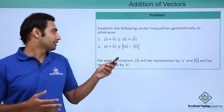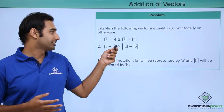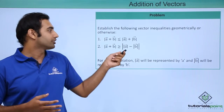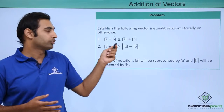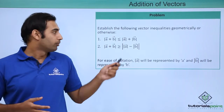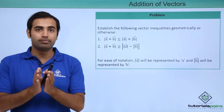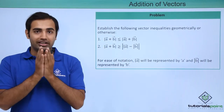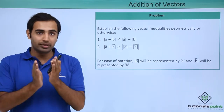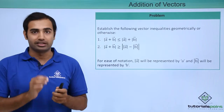The second inequality is that the magnitude of vector A plus B is always greater than or equal to the modulus of the quantity magnitude of A minus magnitude of B. The modulus symbol is present simply because we are interested in the number that comes out of the difference, not the sign.